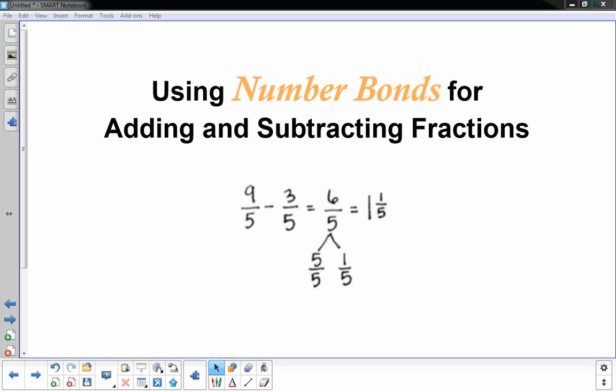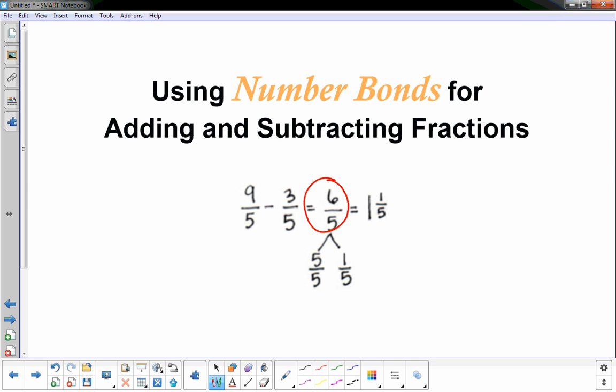This concept of number bonds came from Engage New York, and basically you're looking at an improper fraction like 6/5 and looking at it in parts: 5/5 and 1/5. That helps students visualize how to make that into a mixed number, 1 and 1/5, because the 5/5 is really one whole. So you can look at it this way. Let's get started.